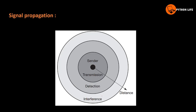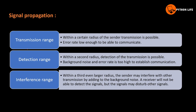Looking at the first diagram, we have three stages of signal propagation: transmission, detection, and interference. Here we have a sender and destination users. The transmission is done, data is taken from the sender, and detection and interference vary with distance and obstacles.